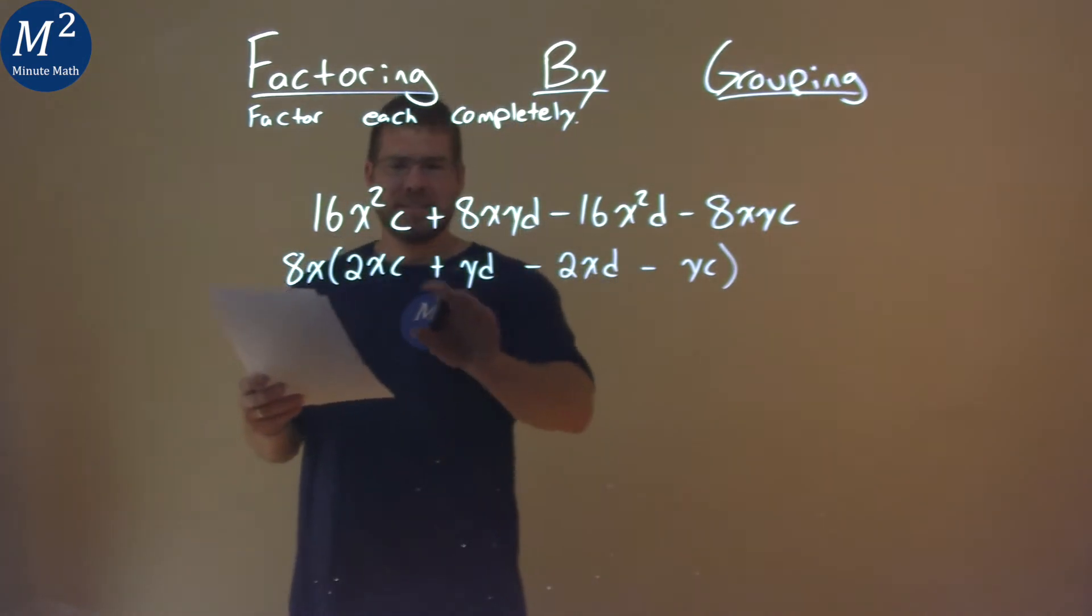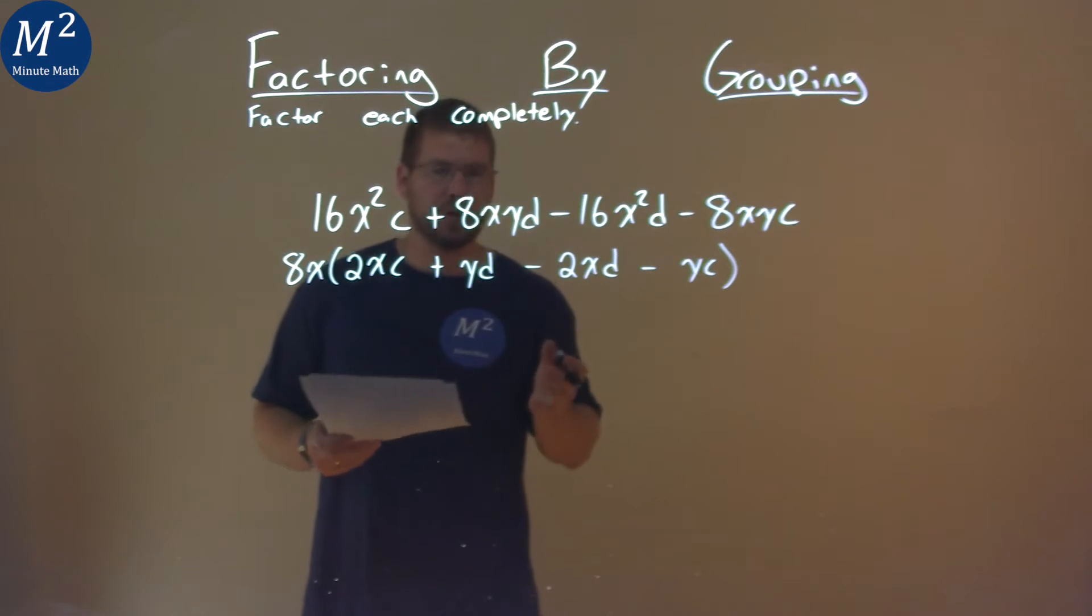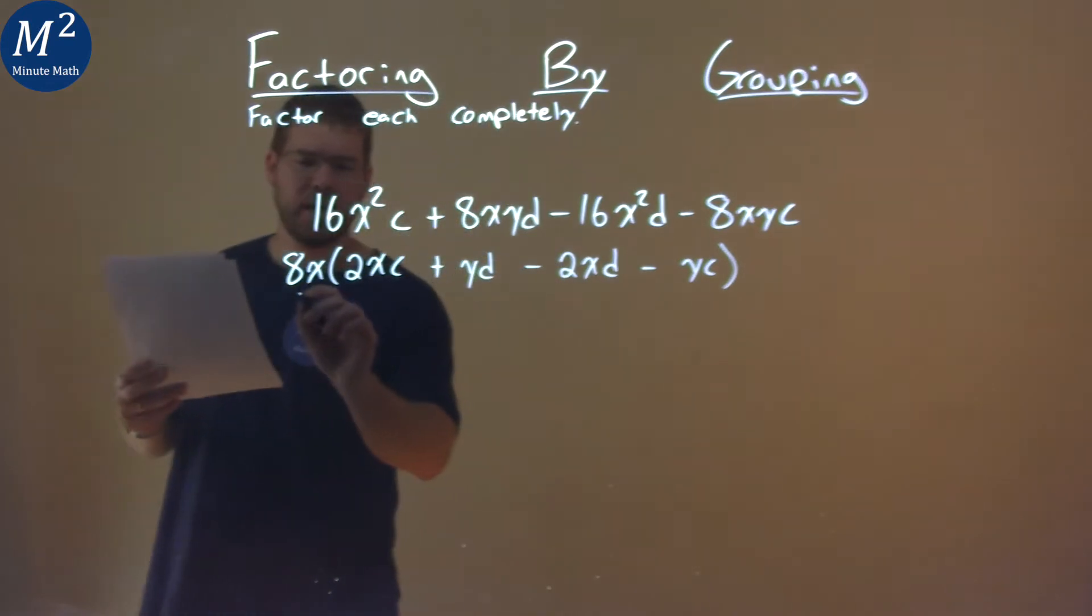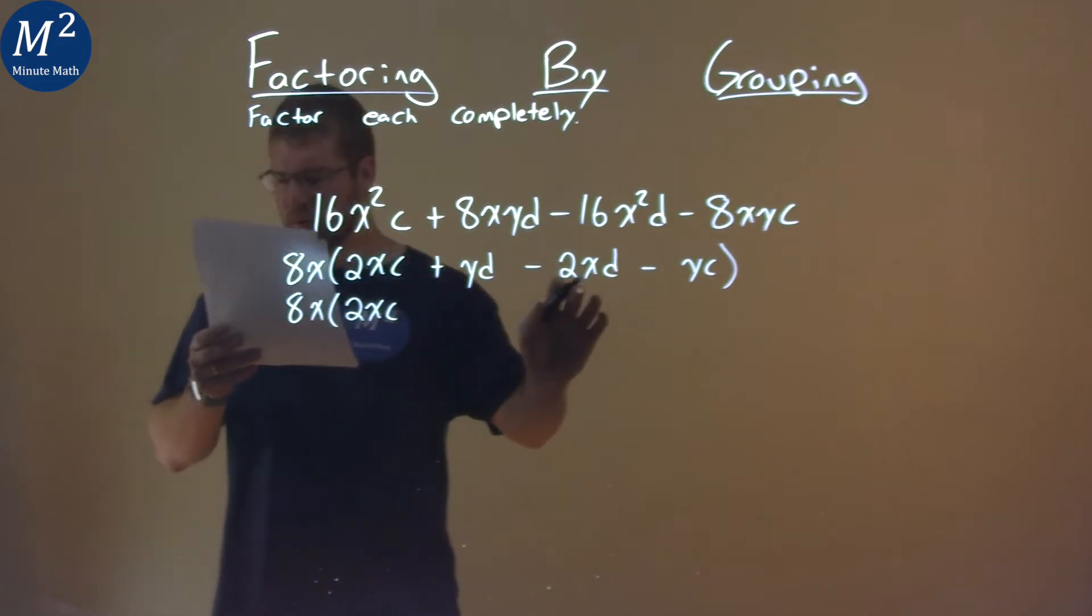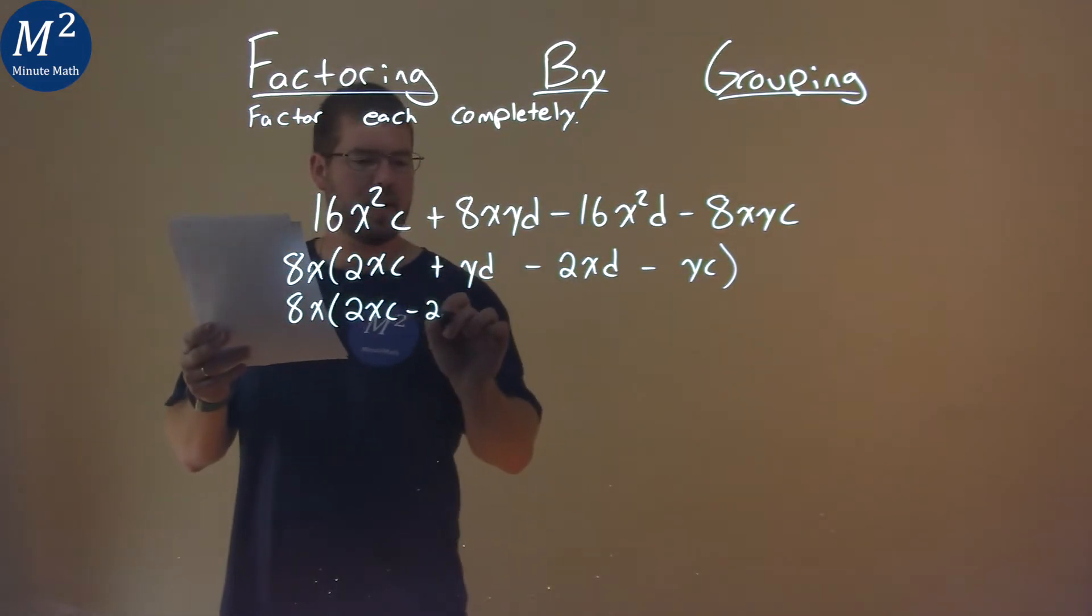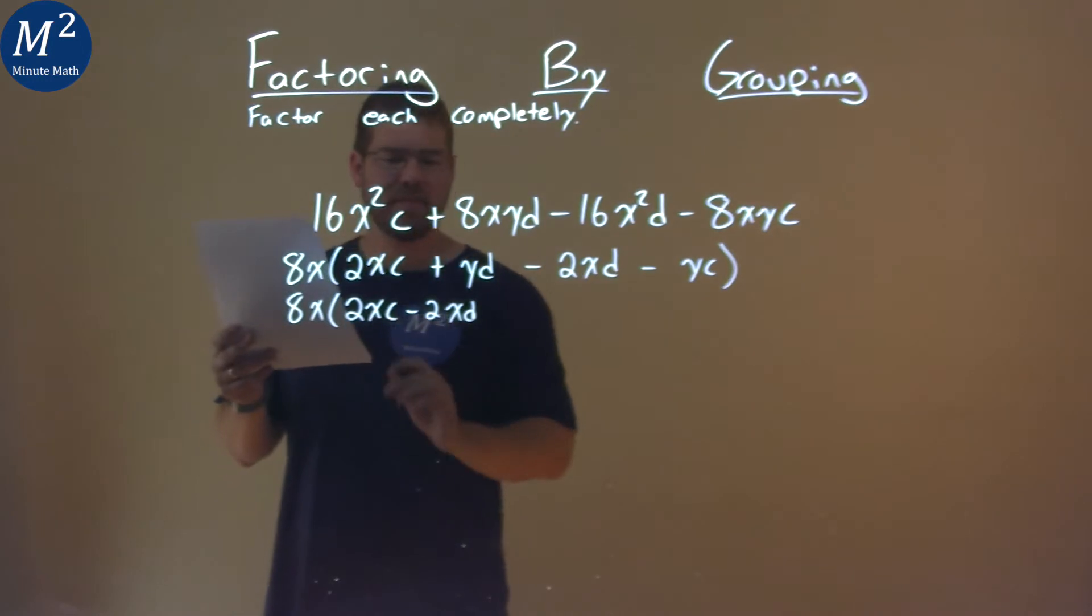Now I'm going to rearrange inside the parentheses to put my similar terms together. So 8x still comes down, and I have 2xc here first, but I'm going to put the -2xd next. They both have a 2x, I notice.